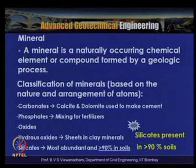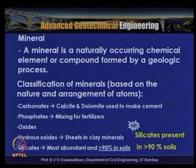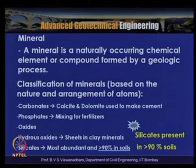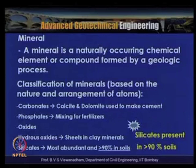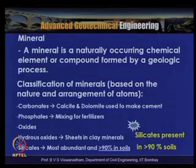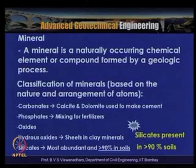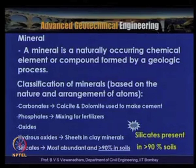Carbonates — calcite and dolomite — are basically used to make cement. Phosphates are used in fertilizers; hydrous oxides appear as sheets in clay minerals. Silicates are the most abundant, with more than 90% of soils consisting of silicate minerals. The most prevalent mineral in soils is silicate.